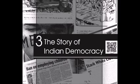Democracies fall into two basic categories: direct and representative. In a direct democracy, all citizens, without the intermediary of elected or appointed officials, can participate in making public decisions. Such a system is clearly only practical with relatively small numbers of people, in a community organization or tribal council, for example, the local unit of a trade union, where members can meet in a single room to discuss issues and arrive at decisions by consensus or majority vote.